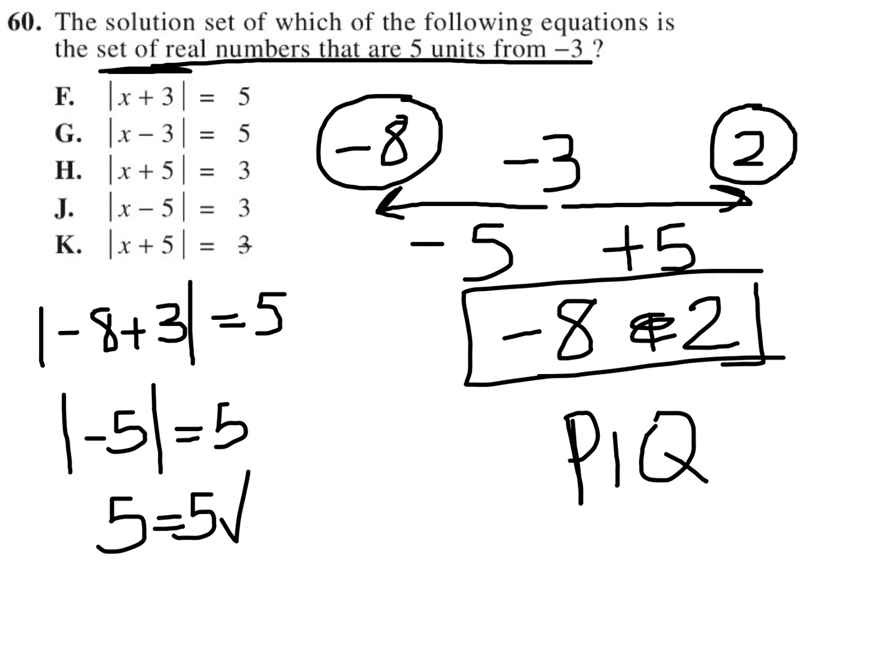So our other value of X, which is positive two, we also try. So I try two plus three equals five. And once again, we get another true statement that five equals five. So that automatically tells us that answer choice F is the correct answer.